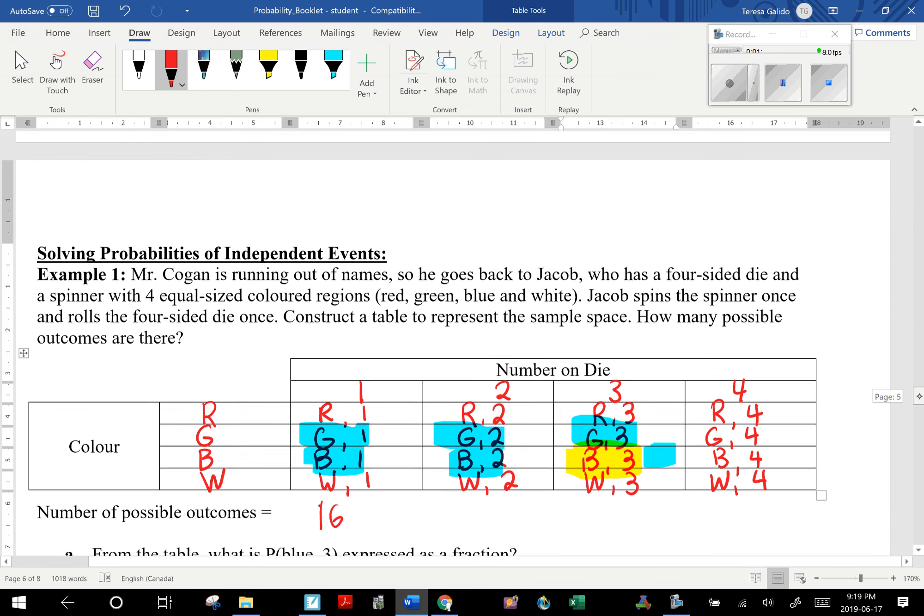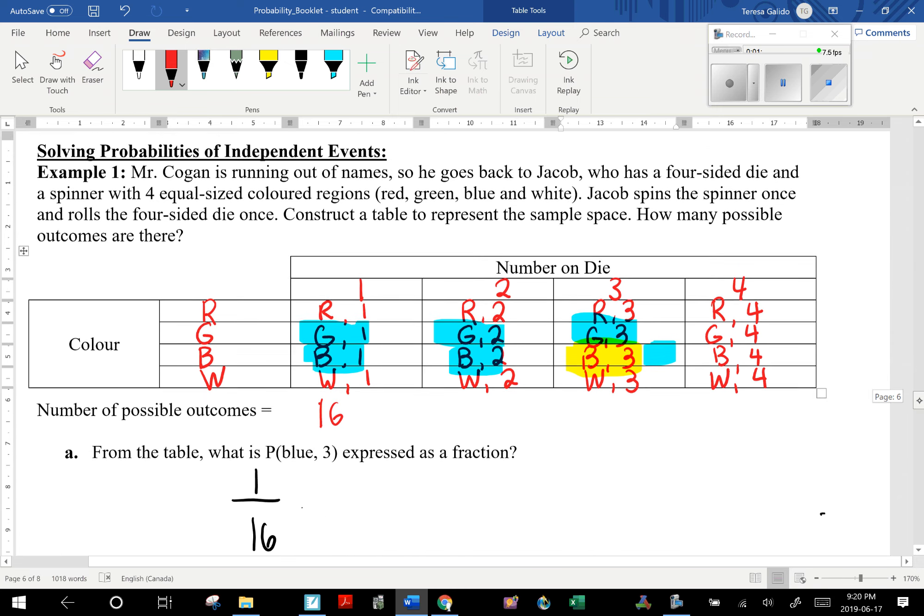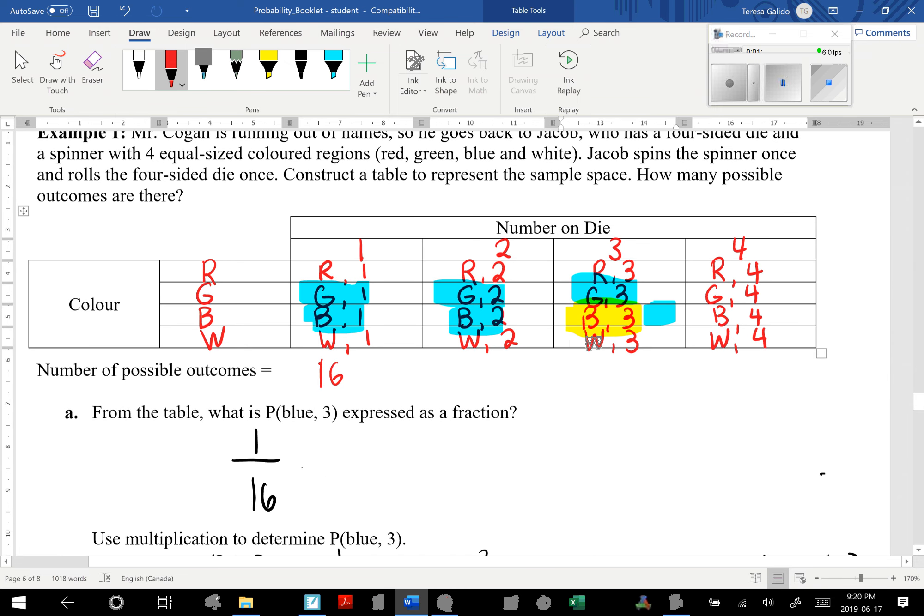Now we're going to answer probabilities involving two independent events—in this case, the number on the die and the color. From the table, what is the probability of getting a blue and a 3? This is read as probability of getting blue and 3. Expressed as fractions, I'm going to write it down.